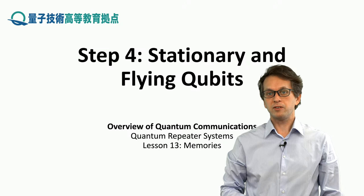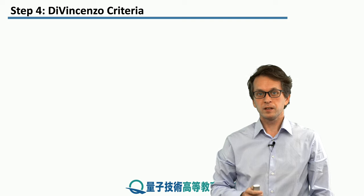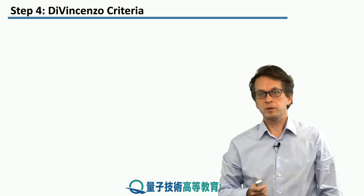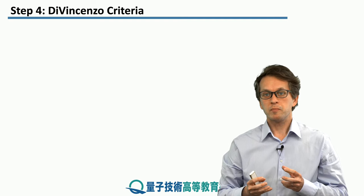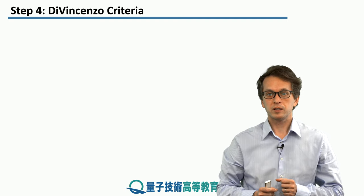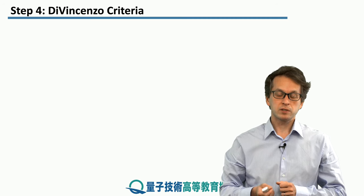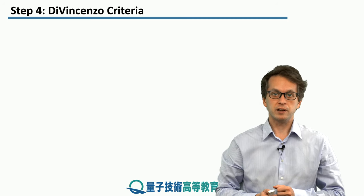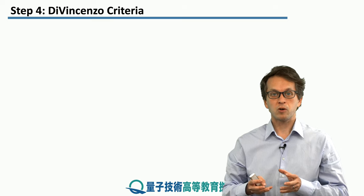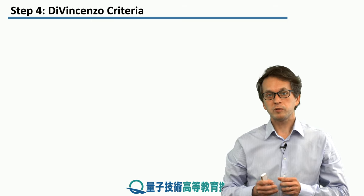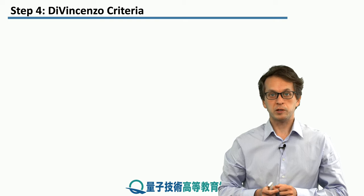Step 4: Stationary and flying qubits. Let's begin talking about what is important — what does a good memory look like and what requirements should it satisfy? We will start with the DiVincenzo criteria. These criteria were introduced in the context of quantum computation, but we will see that a lot of them apply also in the context of quantum networking.